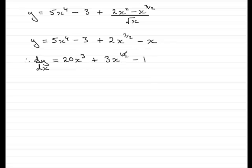You might want to go on, possibly, and write x to the power half as the square root of x. There's nothing to stop you writing this as 20x cubed plus 3 multiplied by square root of x minus 1, but essentially, they're quite happy to accept this answer.